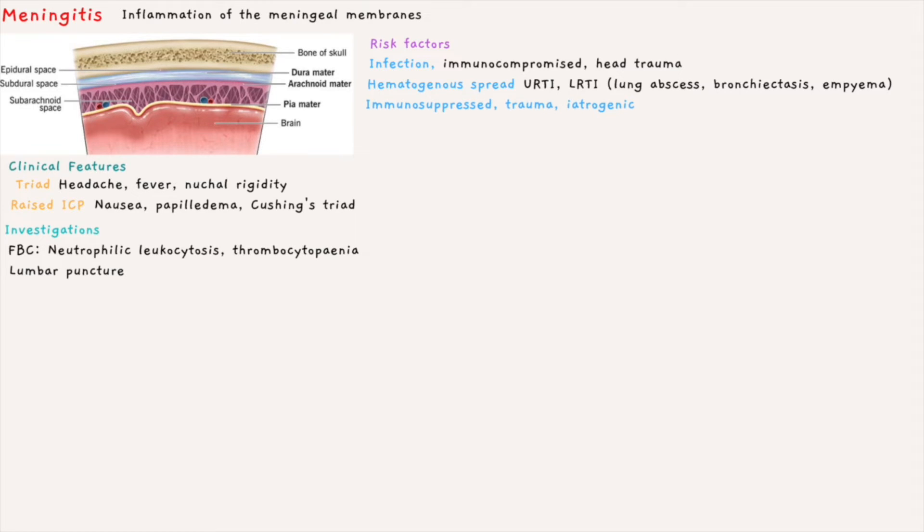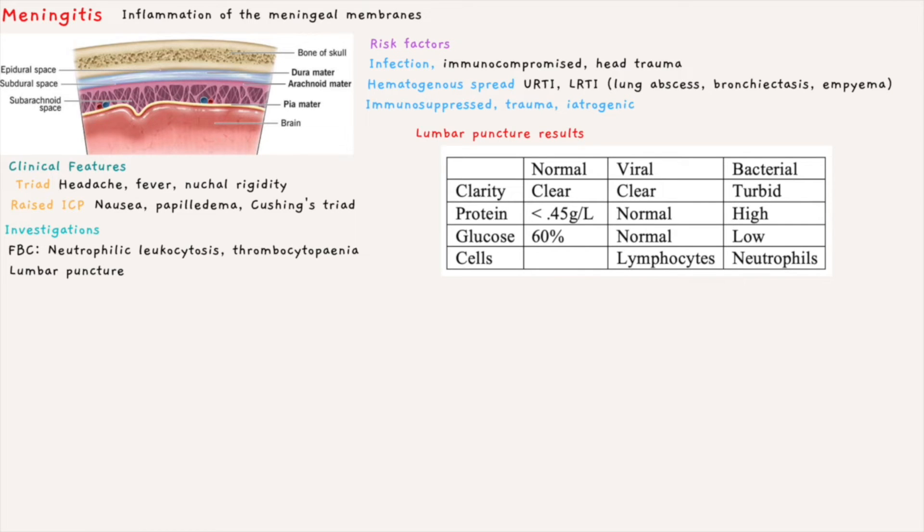Once we have excluded raised intracranial pressure, we can do a lumbar puncture because we know it won't cause herniation. Lumbar puncture is the most important diagnostic tool and this table summarizes the findings.